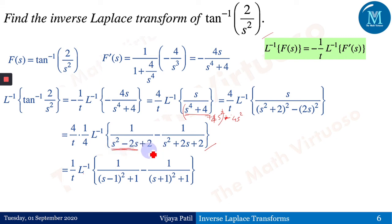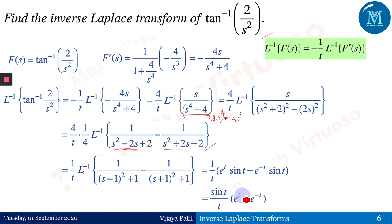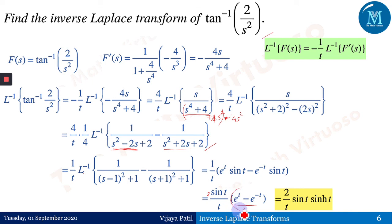Completing the square for each quadratic: s²−2s+2 = (s−1)²+1 and s²+2s+2 = (s+1)²+1. Applying the inverse Laplace to each term gives (1/t)·[e^t·sin(t) − e^(−t)·sin(t)] = (1/t)·sin(t)·(e^t − e^(−t)). Multiplying and dividing by 2, this becomes (2/t)·sin(t)·sinh(t) as the final answer.